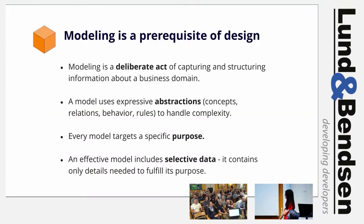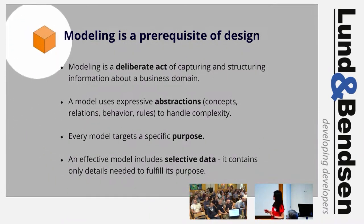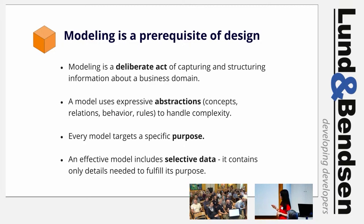We cannot talk about collaborative modeling without talking about modeling itself. Modeling is the prerequisite of design — a deliberate act of capturing information and structuring it through abstractions to handle complexity. A model needs to have a specific purpose and must be selective about data. For instance, I could call this shape 'a symmetrical three-dimensional shape contained by six equal squares,' or I could just call it a cube. That frees up the rest of your brain capacity to process the rest of the model. That's what abstraction is.